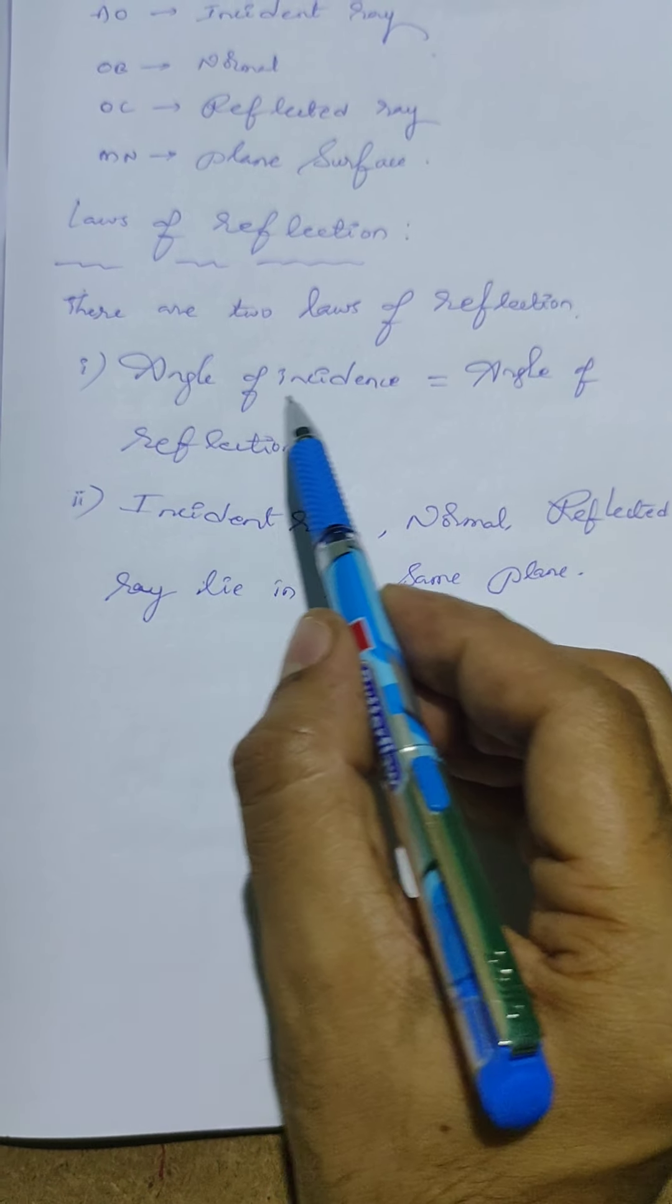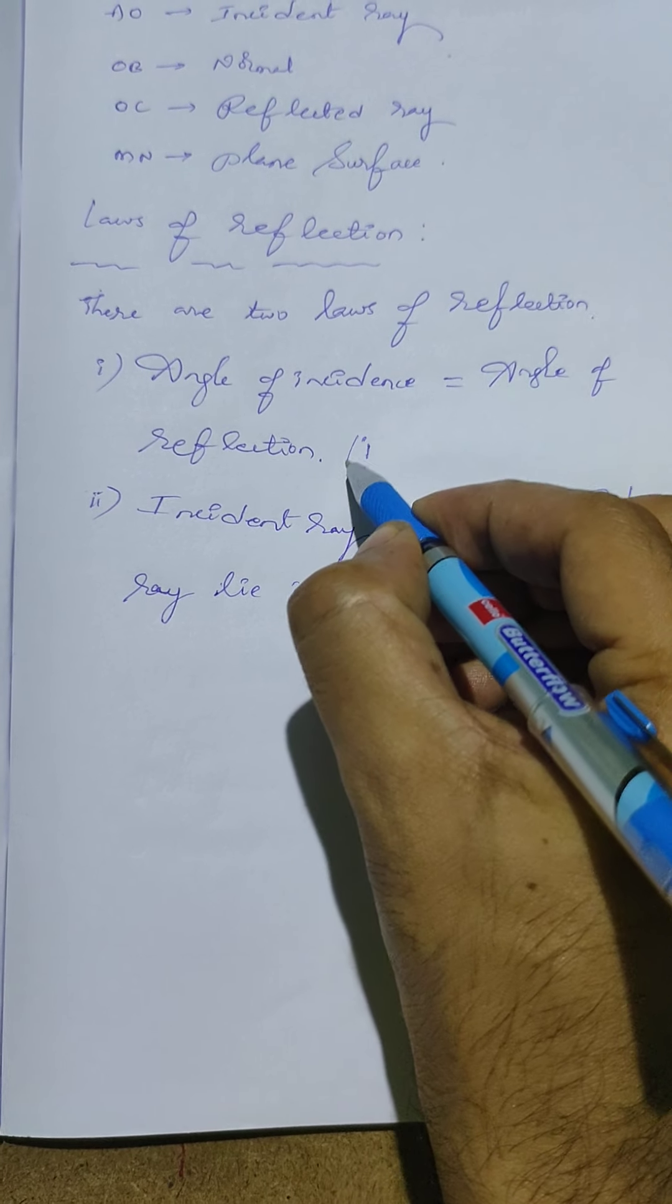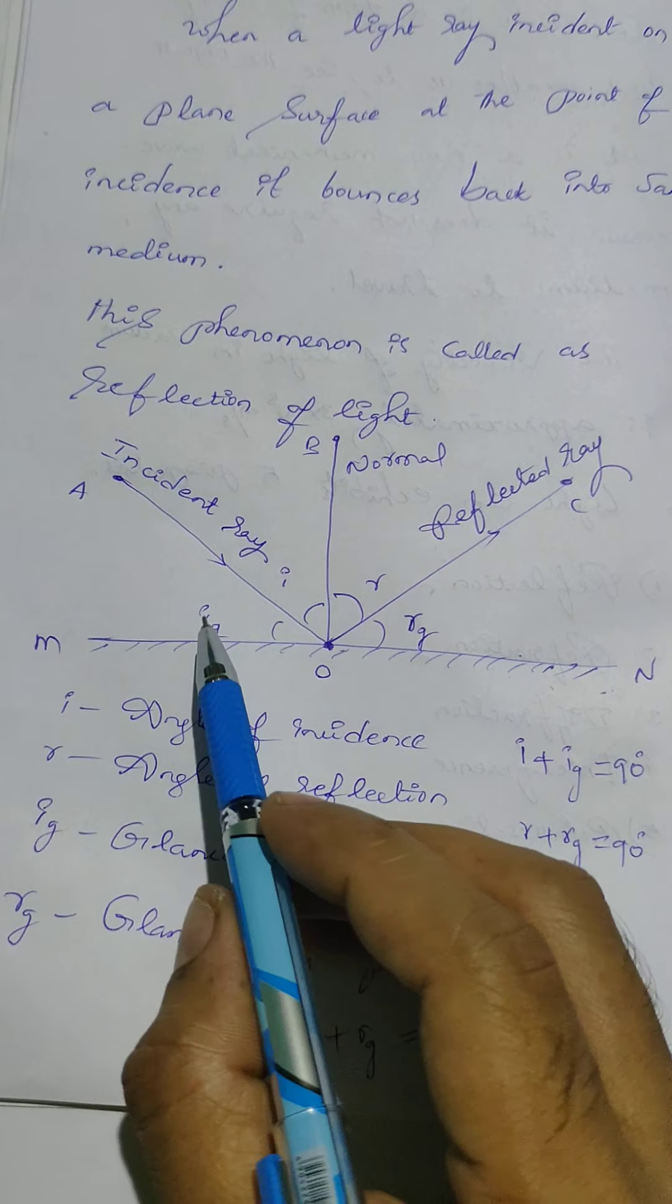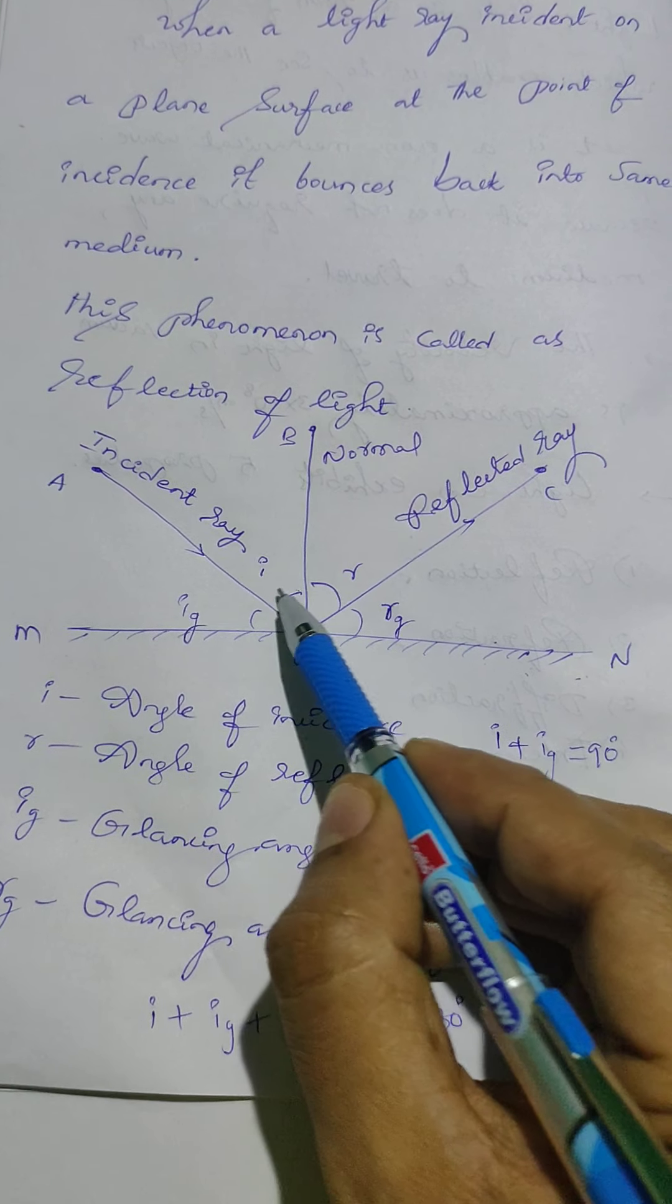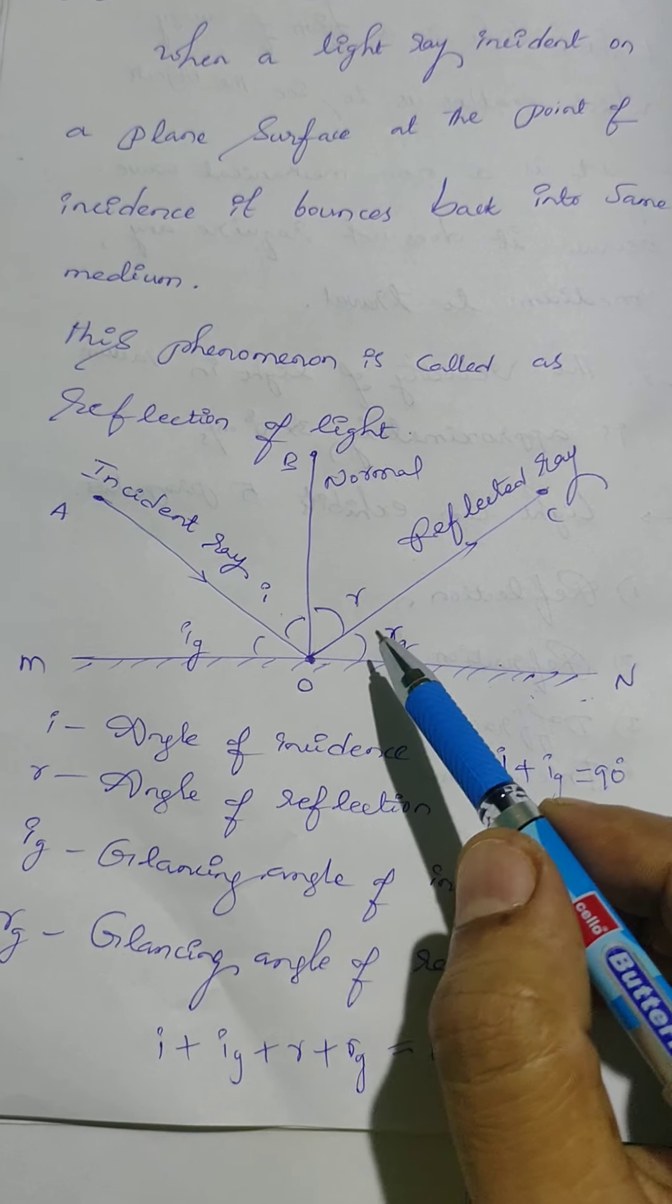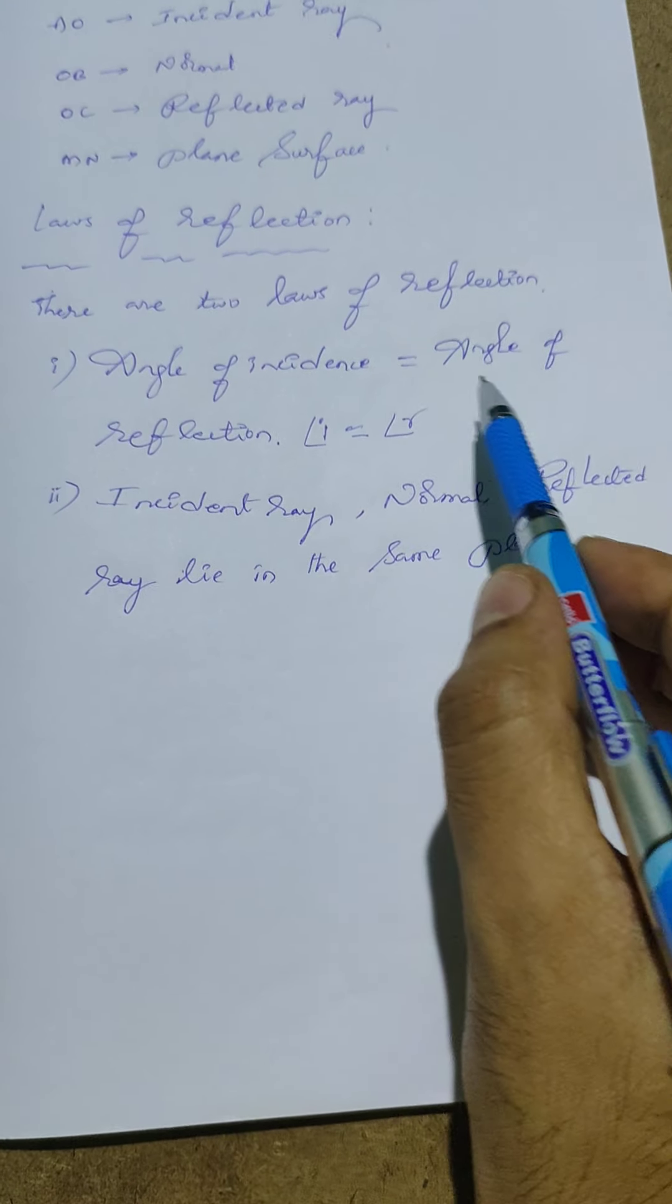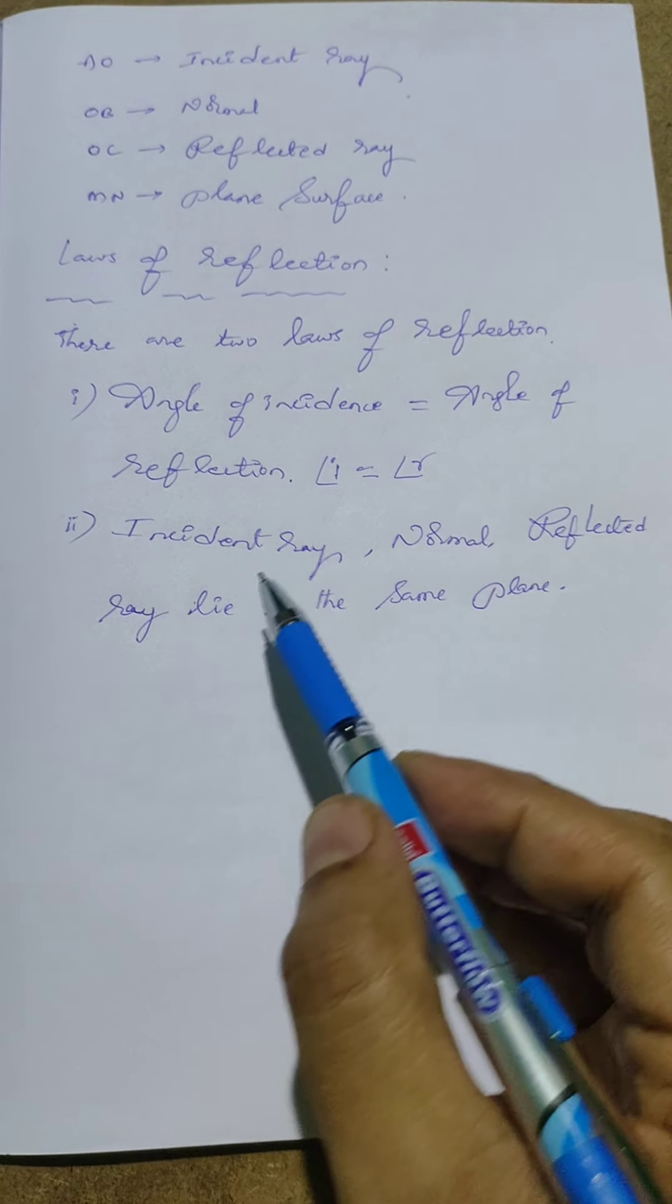They are: one is the angle of incident is equal to angle of reflection. We can also write here like this: angle of incidence is equal to angle of reflection. For example, an incidence ray makes an angle 30 degrees with normal here, so reflected ray also makes 30 degrees only with normal. So what is the first law? Angle of incidence is equal to angle of reflection, so angle i is equal to angle r.